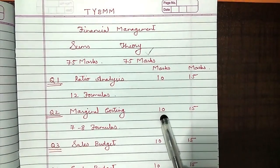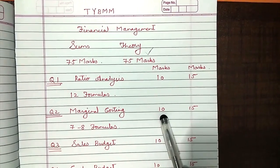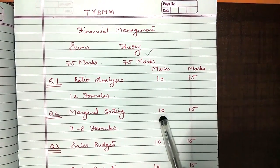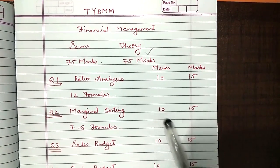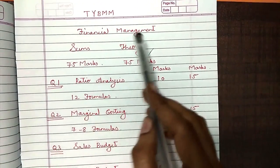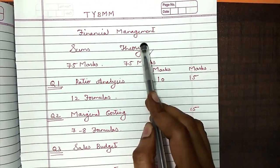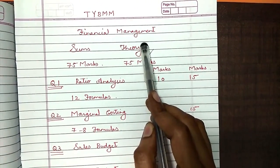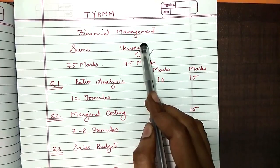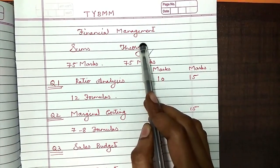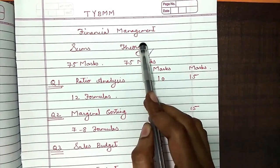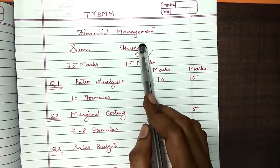Good morning everyone. I am Professor Savita Bodke and today I am going to teach you how, in your sixth semester of financial management, you can score a minimum 55 marks with the help of smart studies.